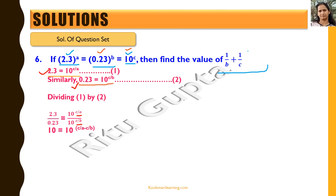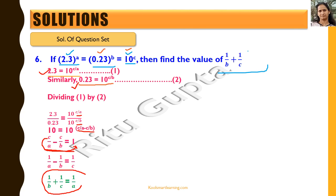That gives 10 raised to power c by a minus c by b, and since the bases are the same, we equate the exponents. So c by a minus c by b equals 1. Dividing the whole expression by c, we get 1 by a minus 1 by b equals 1 by c. Therefore, 1 by b plus 1 by c equals 1 by a. That is the value we were looking for.